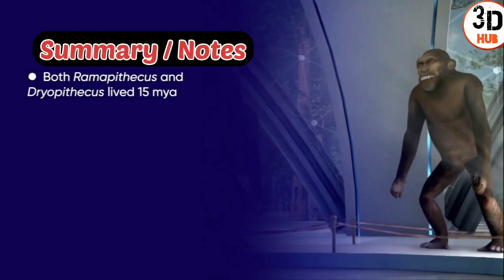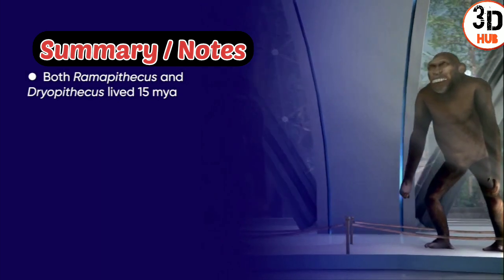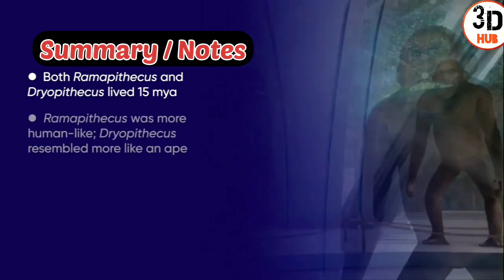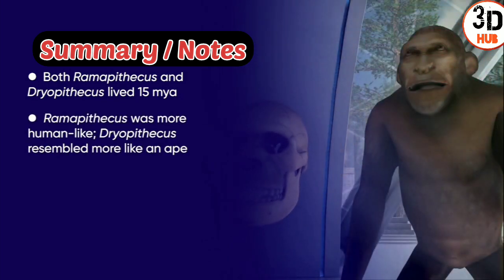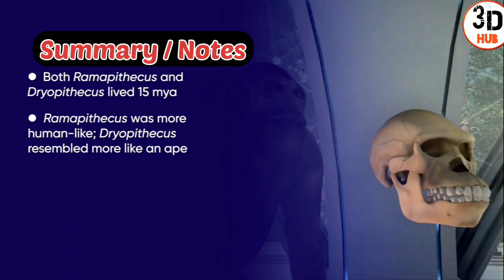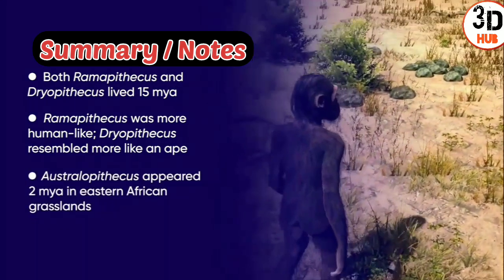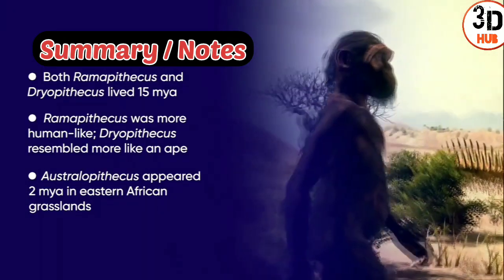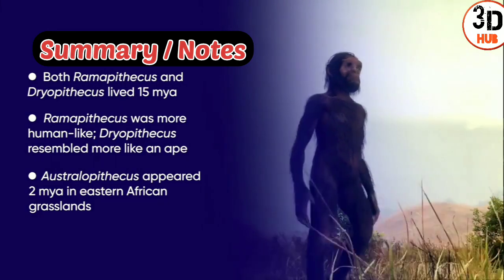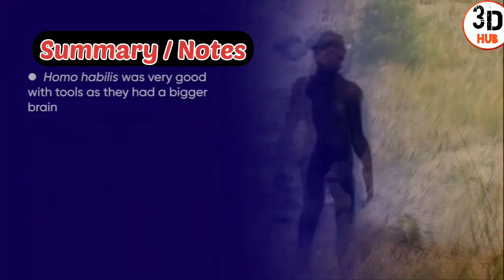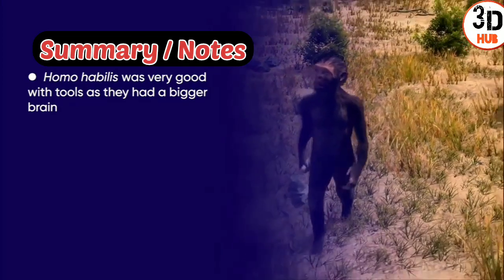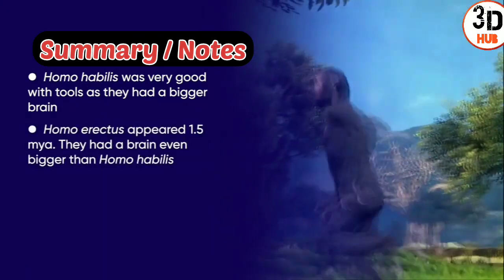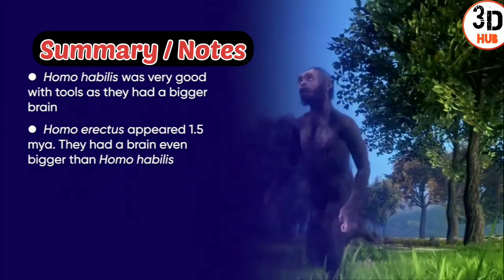In summary: Ramapithecus and Dryopithecus lived 15 million years ago — Ramapithecus was more human-like while Dryopithecus was more ape-like. Two million years ago, Australopithecus appeared in the eastern African grasslands; they were small and walked upright. Homo habilis quickly followed, showing great skill with tools and a bigger brain.